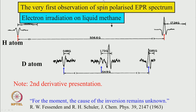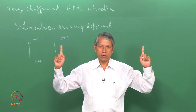The first observation of such a signal was in 1963 when Fessenden and Schuller irradiated liquid methane with an electron pulse. The electron beam broke the molecule producing hydrogen atoms, and what they saw was the two lines of the hydrogen atom with exactly opposite phase. These are not first-derivative EPR signals; they are absorption-mode signals. The low-field line goes down and the high-field line goes up — exactly opposite phase. Normally hydrogen atoms give two lines separated by about 509 gauss, but the populations were exactly opposite for this pair of transitions.